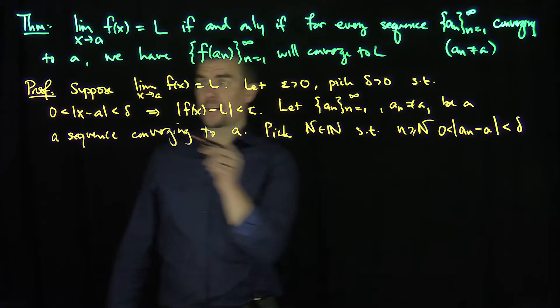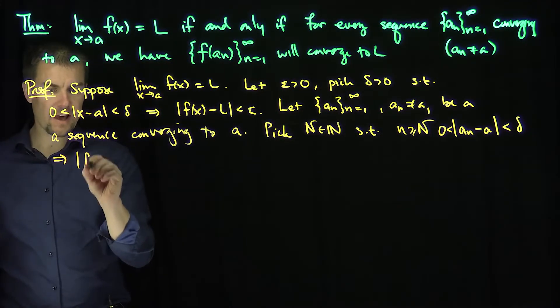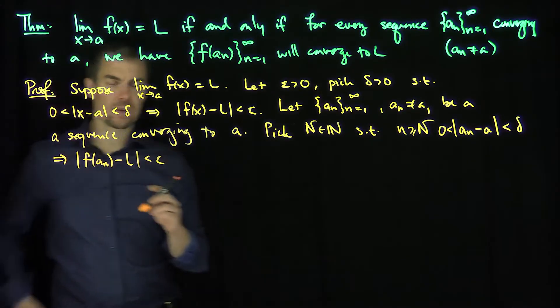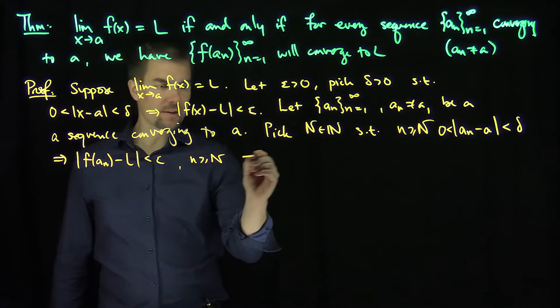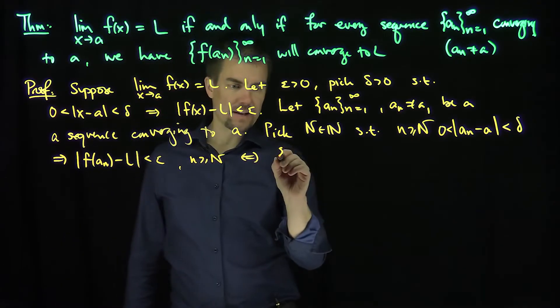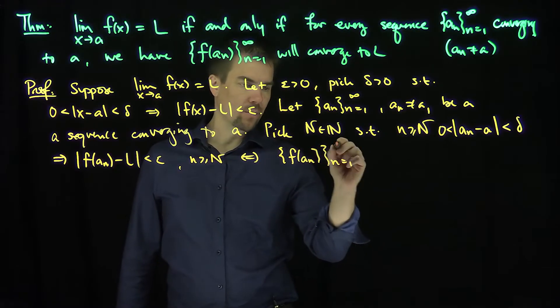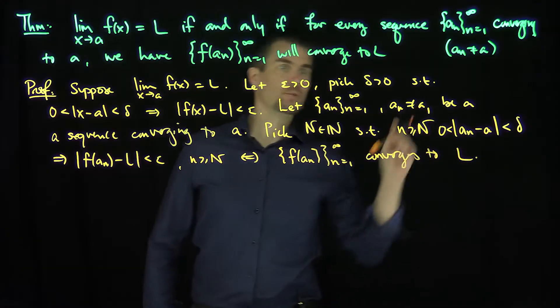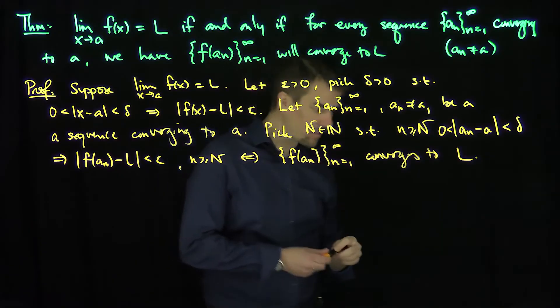Now, since this is the case, I know that aₙ is in this regime, so this implies that |f(aₙ) - L| is less than epsilon if n is bigger than or equal to N capital, and this statement is exactly equivalent to saying that {f(aₙ)}, that sequence, n goes from 1 to infinity, converges to L. So that's one of our directions. That's the direction that if the limit exists, then the sequential characterization will work.